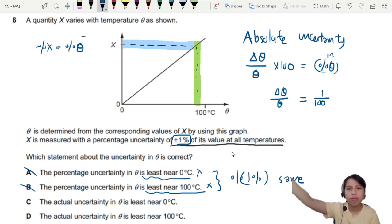That's pretty much fixed everywhere. So then my actual uncertainty will be one over 100 times theta. Also theta over 100.